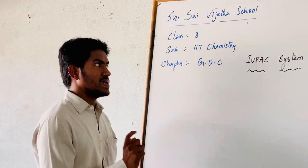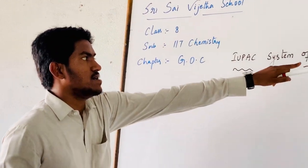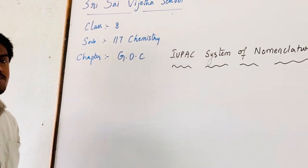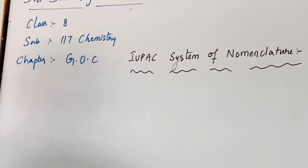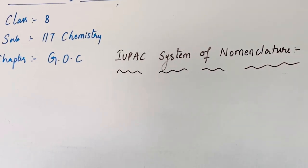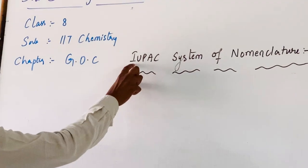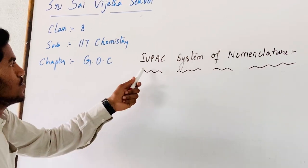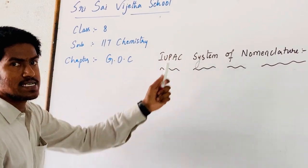In that, the topic is IUPAC system of Nomenclature. In the previous class, we have discussed the priority order rules. And we already know about IUPAC — International Union of Pure and Applied Chemistry.